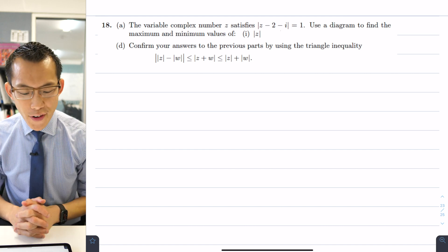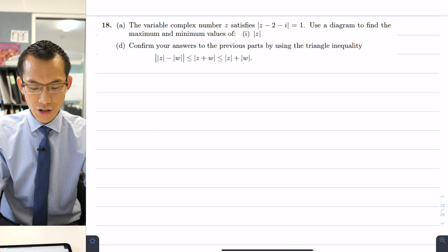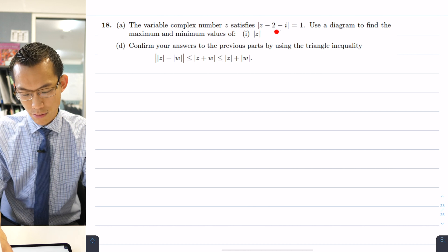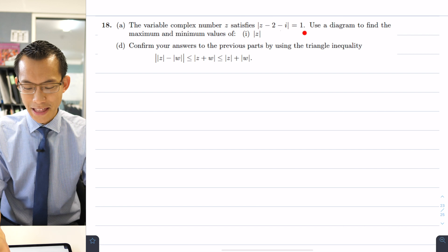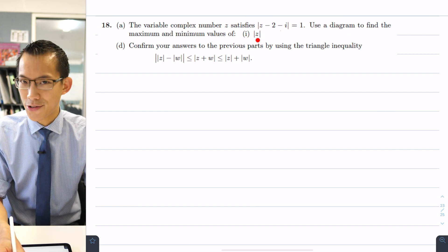The question starts, the variable complex number z satisfies, and then there's this equation here, the absolute value or the modulus of z minus 2 minus i equals 1. We'll come back to what that means in a second. Use the diagram to find the maximum and minimum values of the modulus of z.